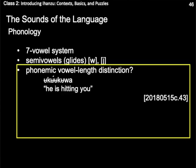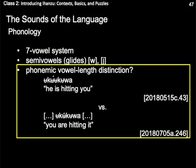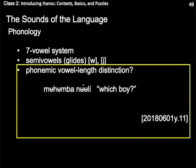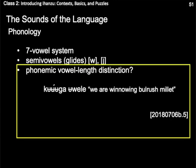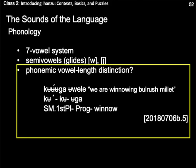For example, compare the form uko kuwa, meaning 'he is hitting you', and uko kuwa, meaning 'you are hitting it'. Clearly, vowel length is an important factor here. But upon closer examination, it seems all occurrences of long vowels can either be described as combinations of two different morphemes, or phonetically long vowels occurring in predictable environments. Take, for example, the phrase muhumba no-li, meaning 'which boy'. The long O vowel is a combination of two short O morphemes which surface as one long vowel. Similarly, in the phrase ko-ga ue-le, meaning 'we are winnowing bulrush millet', with a seemingly extra-long vowel, the O vowel is actually the combination of three separate morphemes.